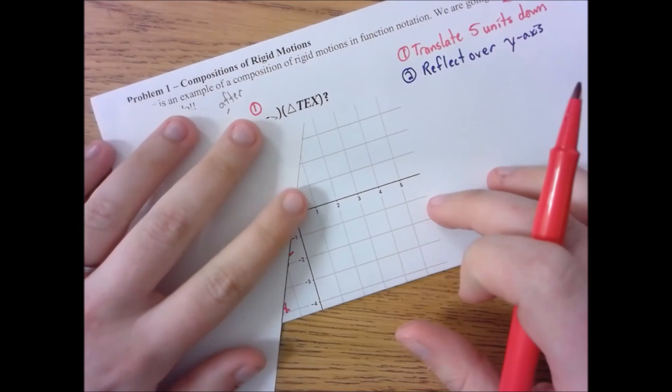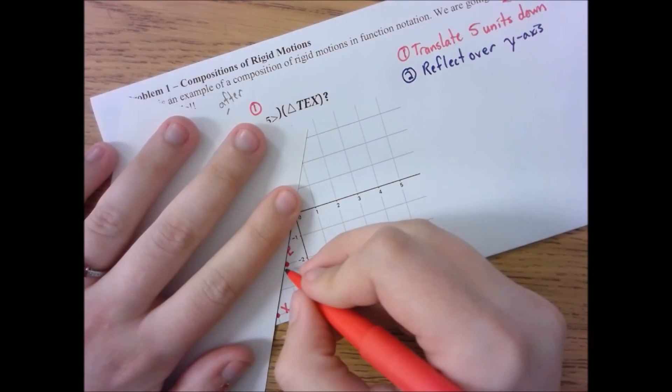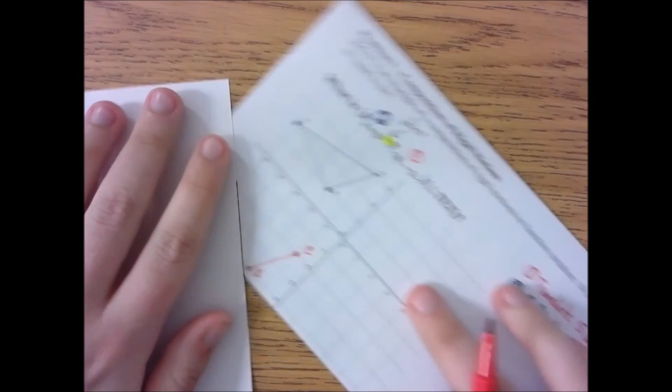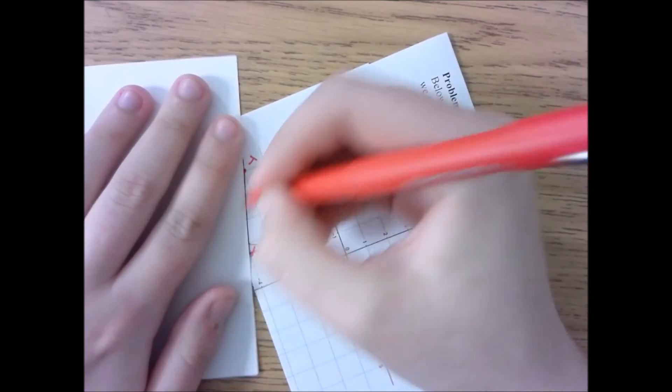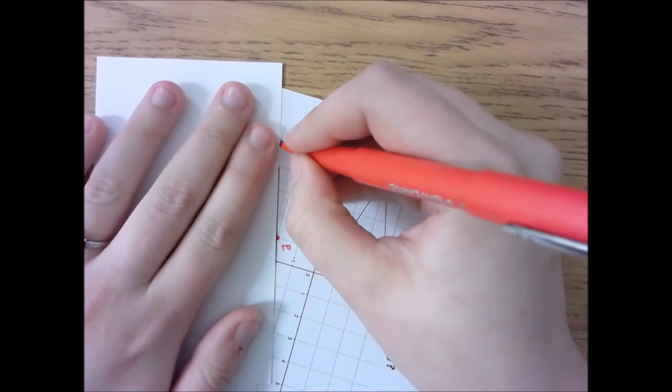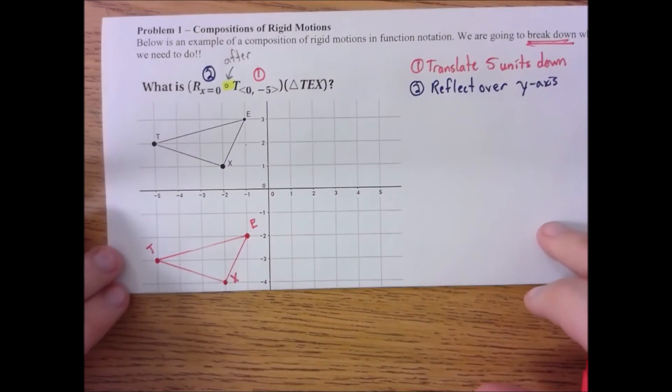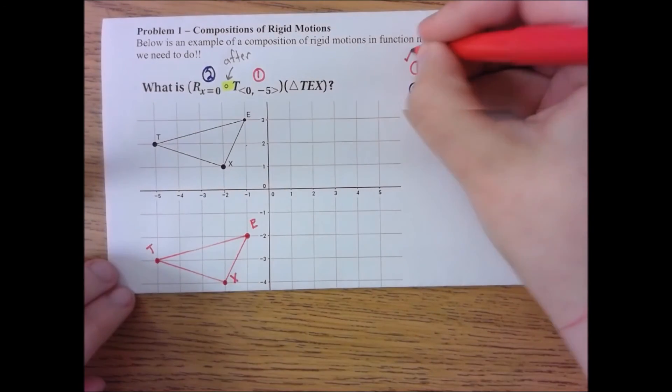I'm going to use an index card to connect these. It's amazing how handy these things come in, note cards and such. And there we go. There's TEX. So the first transformation, done.